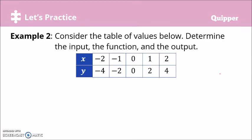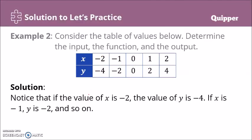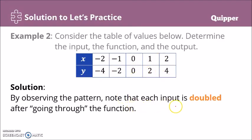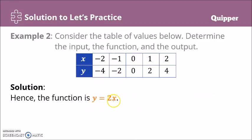Another example: consider the table of values below — determine the input, the function, and the output. We have the x values: negative 2, negative 1, 0, 1, and 2. These are our input. The values of y depend on the values of x — those are our output. Notice that if x is negative 2, y is negative 4; if x is negative 1, y is negative 2; if x is 1, y is 2; if x is 2, y is 4. It's times 2 — each input is doubled. Therefore, the function is y equals 2x.